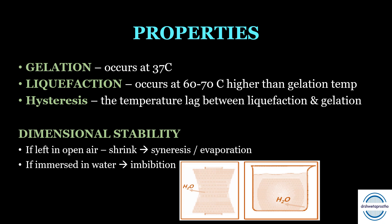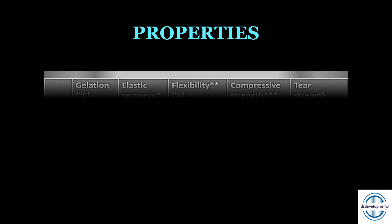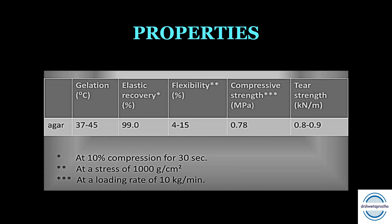Mechanical properties of agar: elastic recovery is very good at approximately 98.8 to 99%. Flexibility is around 4 to 15%; some good materials offer up to 20% flexibility. Compressive strength is 0.78 MPa, in the range of 0.5 to 0.9 MPa. Tear strength is 0.8 to 0.9 — so the tear strength is also very good.